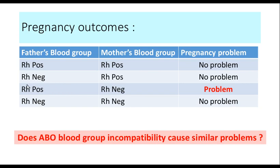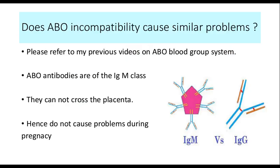Does ABO blood group incompatibility also cause similar problems? The answer is no. Because ABO antibodies are IgM class. IgM antibodies are large — five times the size of IgG — and cannot cross the placenta. So when there is ABO incompatibility, even if the child is a different blood group, the pregnancy will not be affected because the antibodies are IgM and cannot cross the placenta.